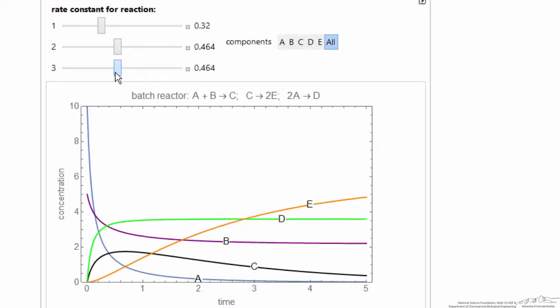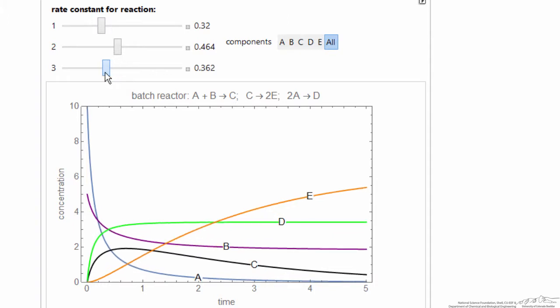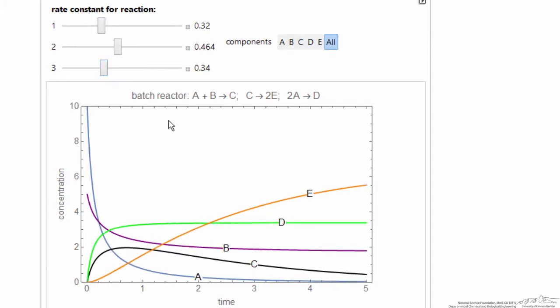So if I change the rate constant of the last reaction, then I have a lot more E, because A is not reacting away to D before the first reaction can take place.